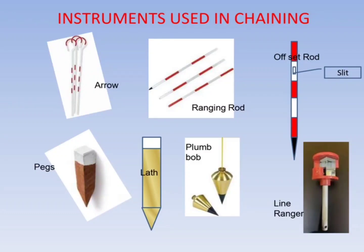Plumb bobs are used for making ranging rods vertical and transferring the instrument position from instrument height to ground. Whites are locally available sticks used for surveying purposes.